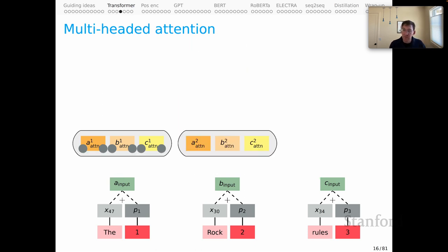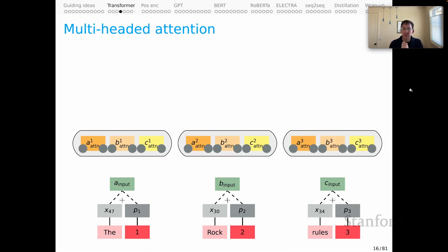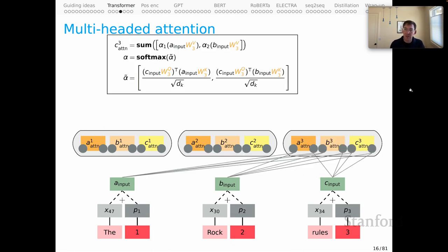We do the same thing for our second attention head, all of those dot products, but now augmented with those new learned parameters. Same thing, queries, keys, and values, but now two for the second attention head. And we repeat exactly the same thing for the third attention head, again with parameters corresponding to that third head.